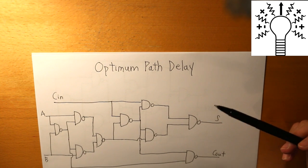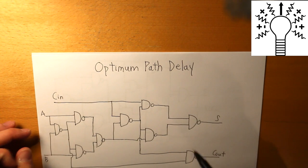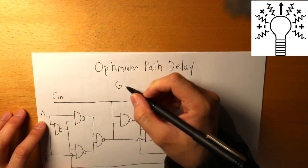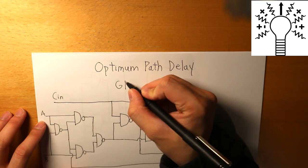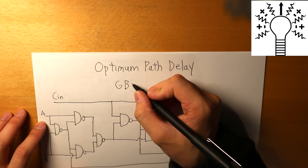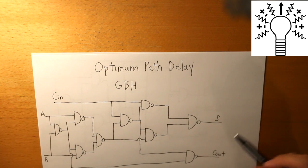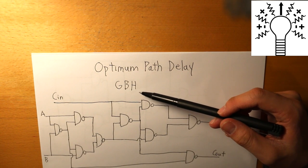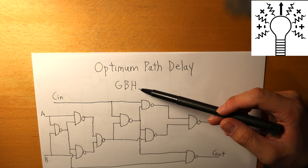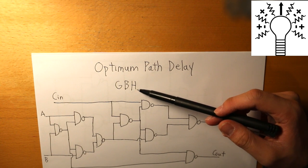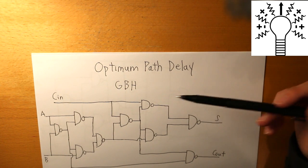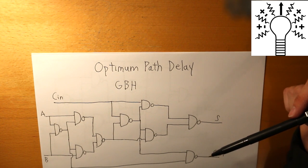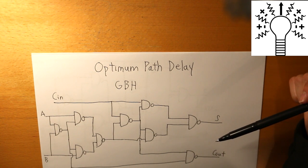The objective is to calculate the optimum path delay. The equation for the optimum path delay is the gate multiplied by the branch, multiplied by your output over your input. This is not your delay entirely yet — what it is is the effort delay, and we can use that later to find what our path delay is going to be.